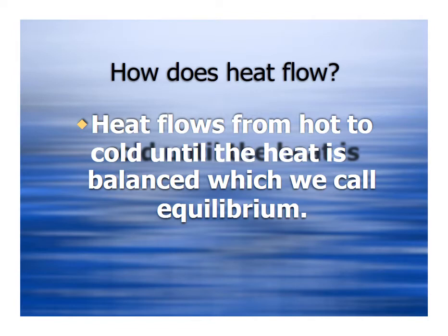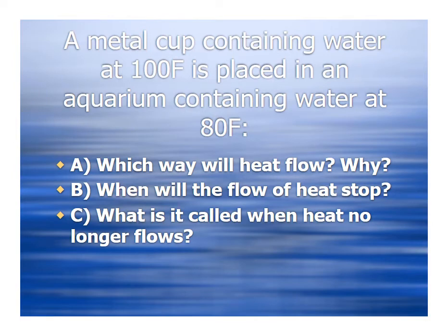How does heat flow? Heat flows from hot to cold until the heat is balanced. For example, a metal cup containing water at 100 degrees Fahrenheit is placed in an aquarium containing water at 80 degrees Fahrenheit. The heat will flow from the metal cup to the aquarium, since heat always flows from higher temperature to lower temperature.